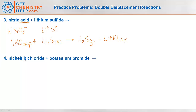Let's balance it. One hydrogen on the reactants, two on the products, so we'll make this two hydrogens. That gives us two nitrates, so we need two on the products. Now we have two lithiums on the products and already two on the reactants. One sulfur on each side — so that one's balanced.